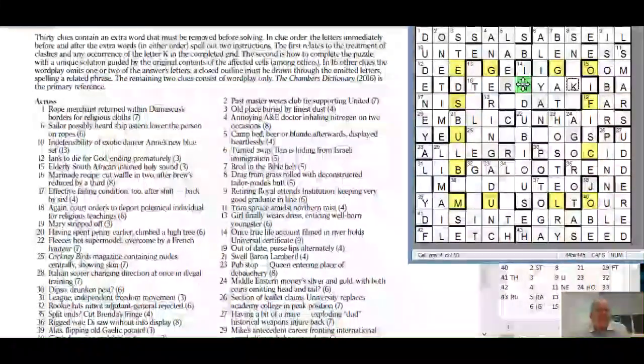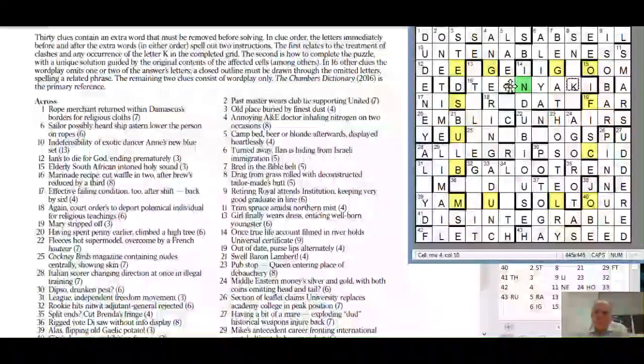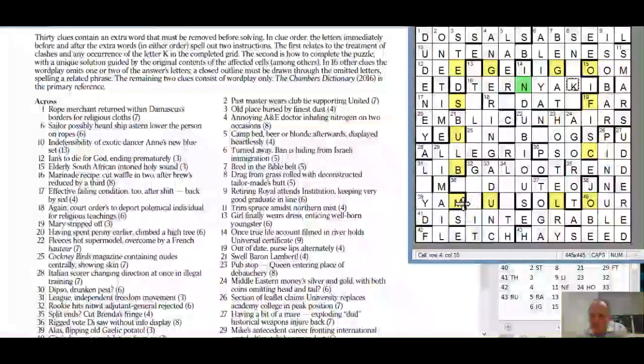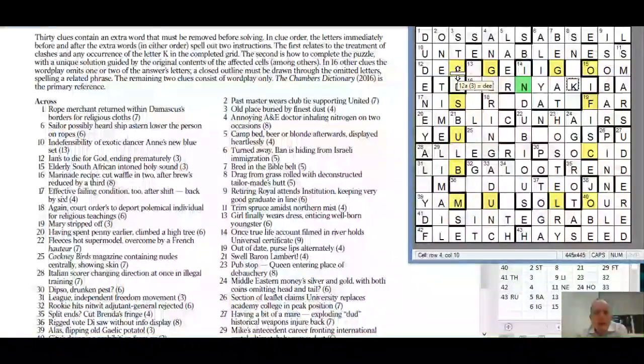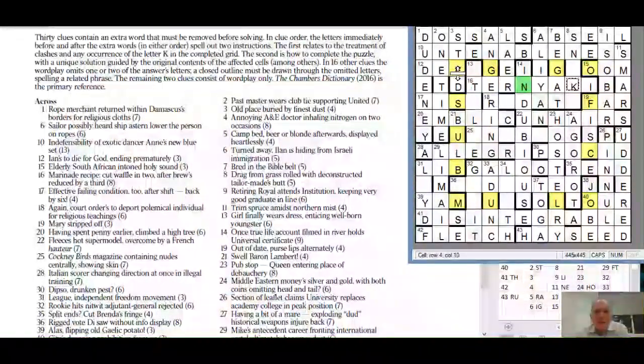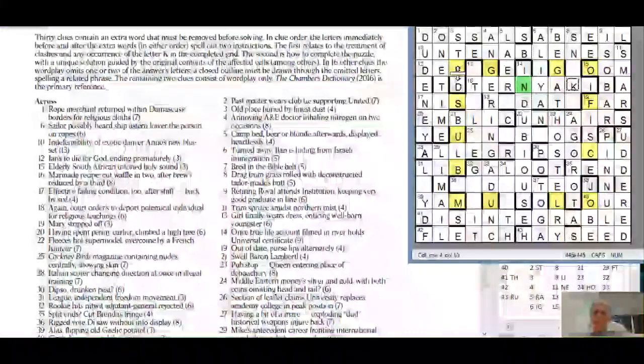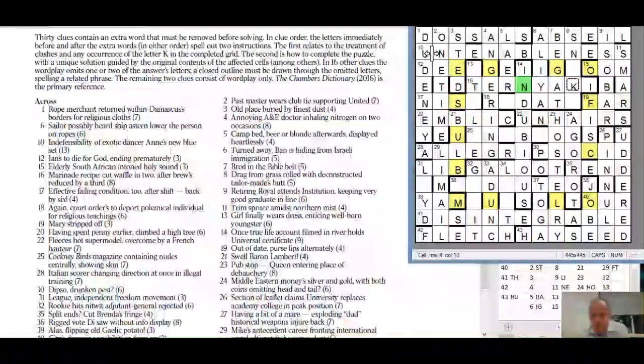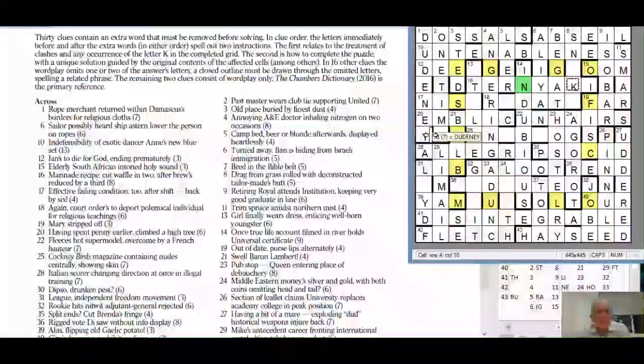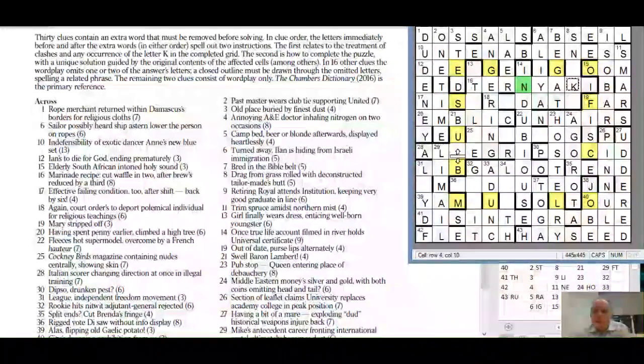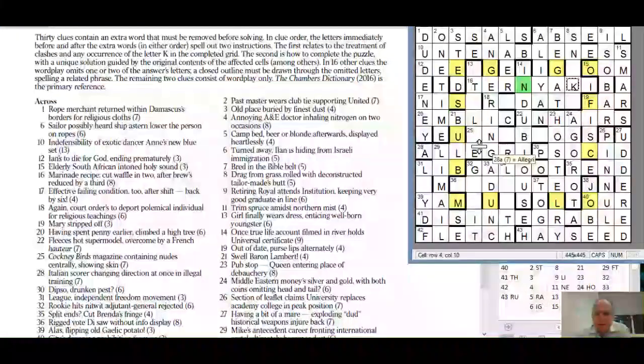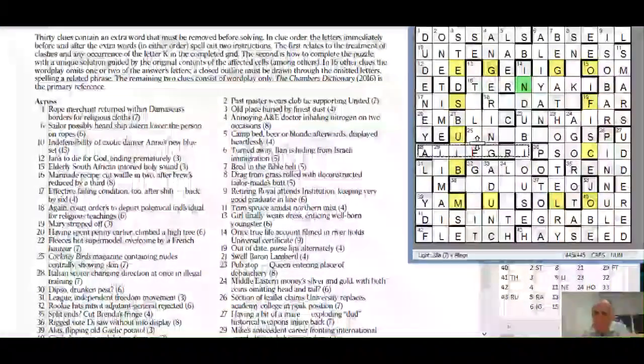And sixteen other clues the wordplay omits one or two of letters answers. A closed outline must be drawn through the omitted letters so the egg of Columbus looks like it is quite square which is very weird spelling a related phrase. So I'm going to have to look up egg of Columbus. I'm still very suspicious that Mr. Dudney is involved in this. Two clues consists of wordplay only - I haven't figured out what they are at all.